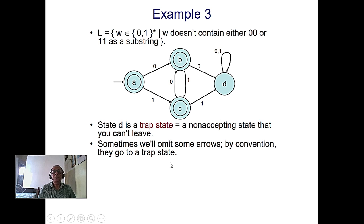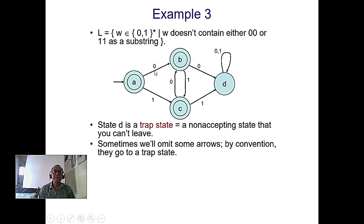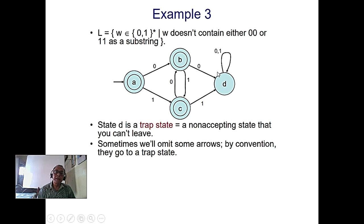By convention some arrows are sometimes omitted, but we should not omit them. In a finite state machine, every state must have transitions defined for all input alphabets — it must go to some state or loop back to itself. Every input must lead to exactly one state.